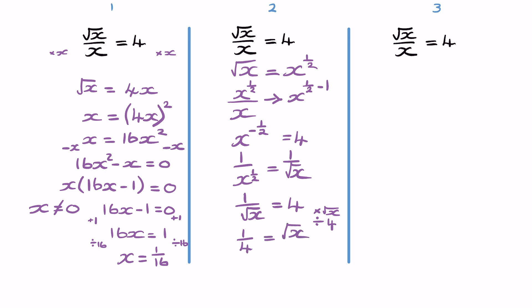And now if we square both sides, we have 1 over 4 squared. The square one gets rid of the square root sign. x equals 1 over 16.